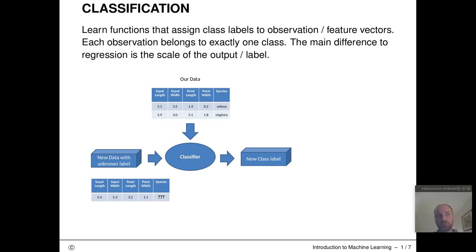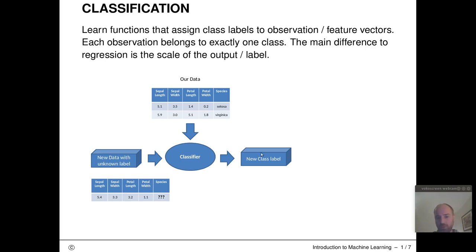We assume there's a finite set of class labels — not too many, maybe three, something like red, green, and blue — and we predict for each observation the specific class it falls into. A classifier is a function learned from training data. This function takes a vector of feature values and outputs a discrete class label.